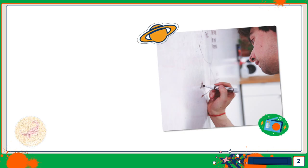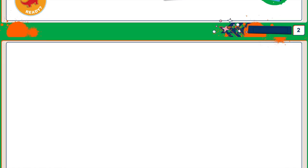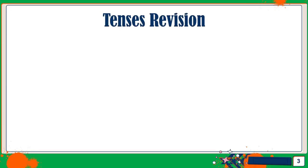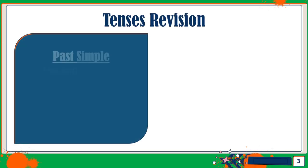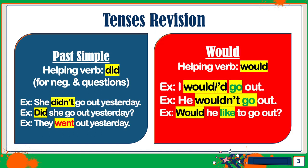First, let's do a general quick overview — a tense revision. So first we have the past simple. The helping verb, as you may know, or auxiliary verb, is 'did' for every person. So first, second, third, fourth and so on. We use the helping verb 'did' for negative sentences or questions.